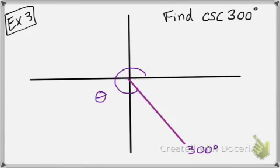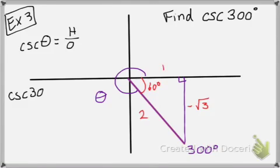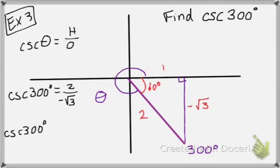What if I ask you to find the cosecant of 300 degrees, which is in quadrant 4? Create a right triangle. My reference angle is going to be 60 degrees. Mark it up: 1, 2, negative root 3 because it's going down. My ratio for cosecant is hypotenuse over opposite — remember it's the reciprocal of sine. So to find the cosecant of 300, the hypotenuse is 2 and the opposite is negative root 3. Rationalize the denominator, and you get negative 2 root 3 over 3.